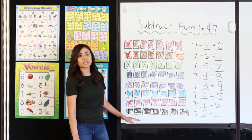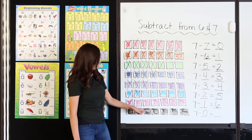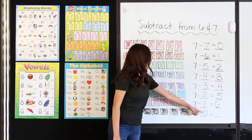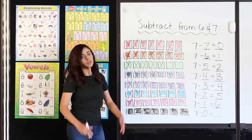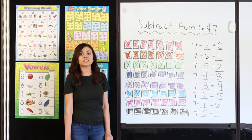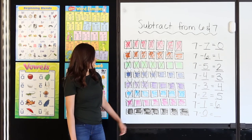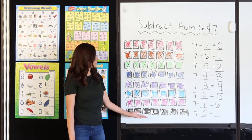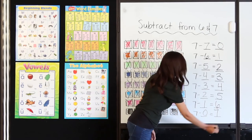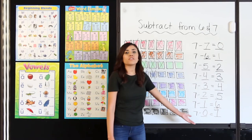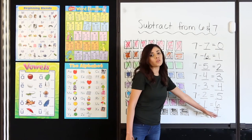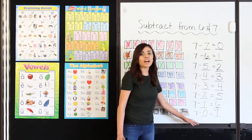I have 7 black squares — 1, 2, 3, 4, 5, 6, 7. I'm going to take away 0. Remember, 0 means none, so I am not taking any away. So I still have 7. 7 minus 0 equals 7. And if you remember the rule of 0, a number minus 0 equals that number.